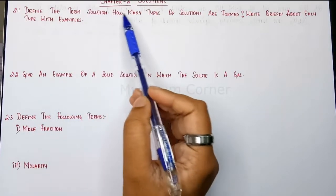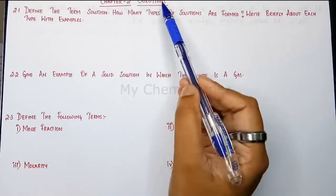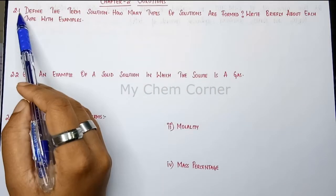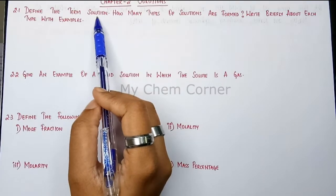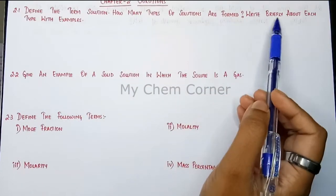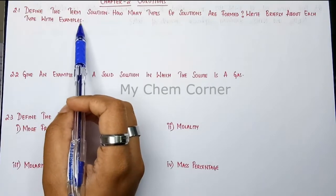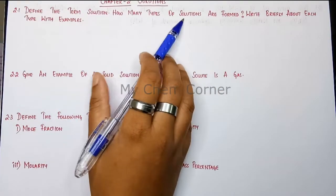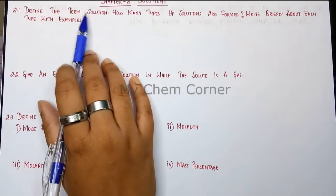Next is solutions from chapter number two. The name of the chapter is Solutions. The first question is 2.1: define the term solution, how many types of solutions are formed, and write briefly about each type with an example. It's a theory-based question, so let's see how you're going to answer this.